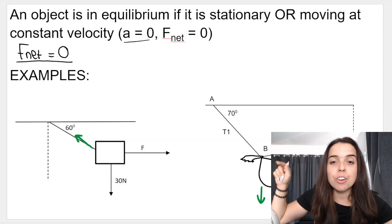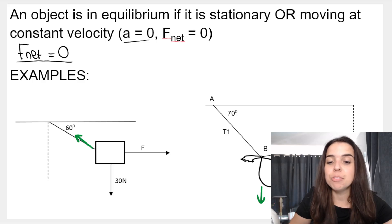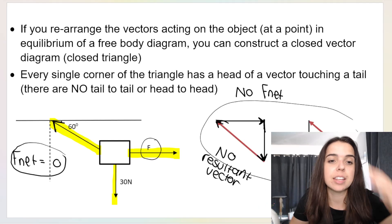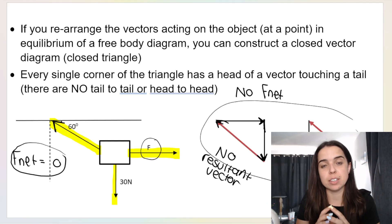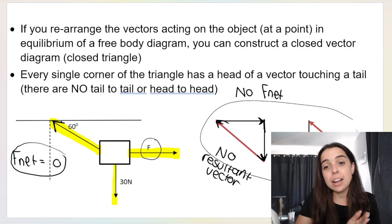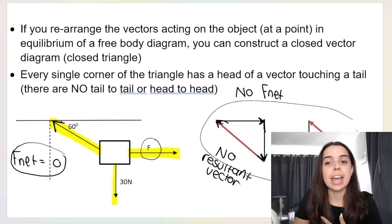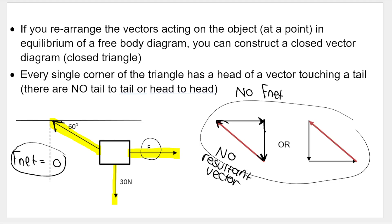Take note that acceleration is zero if net force is zero. If this is the case, what we can do is rearrange the vectors that act on the object and construct a closed vector diagram — a closed triangle, or triangle of forces. What's very important is that every corner of this triangle has a head-to-tail connection, so take note how head is touching tail in every single corner. There is no resultant vector, no F-net vector.